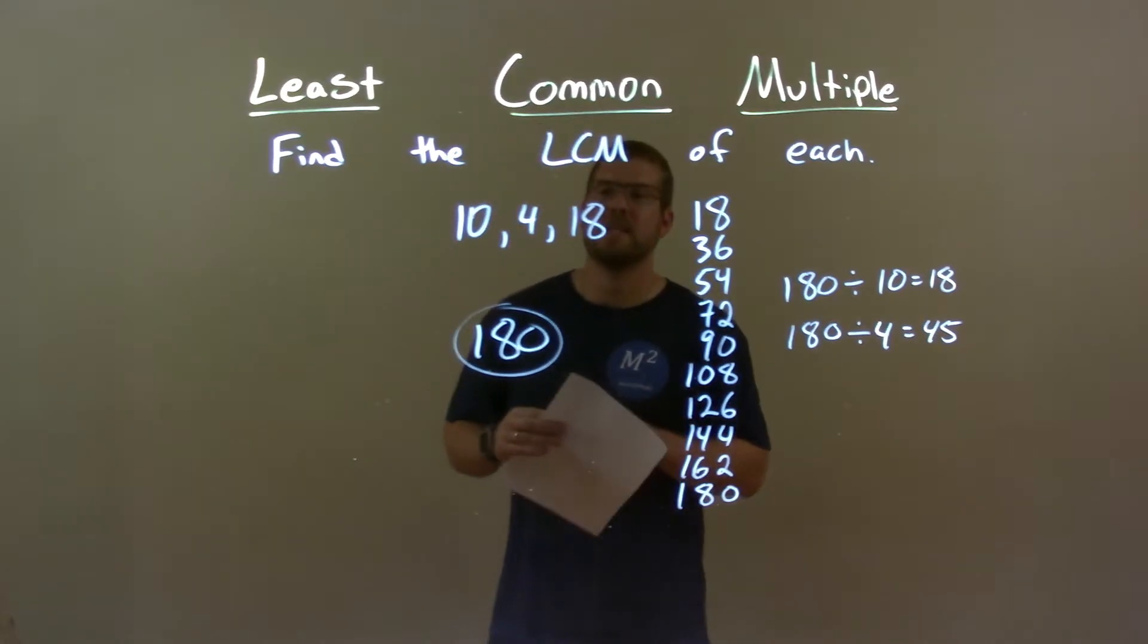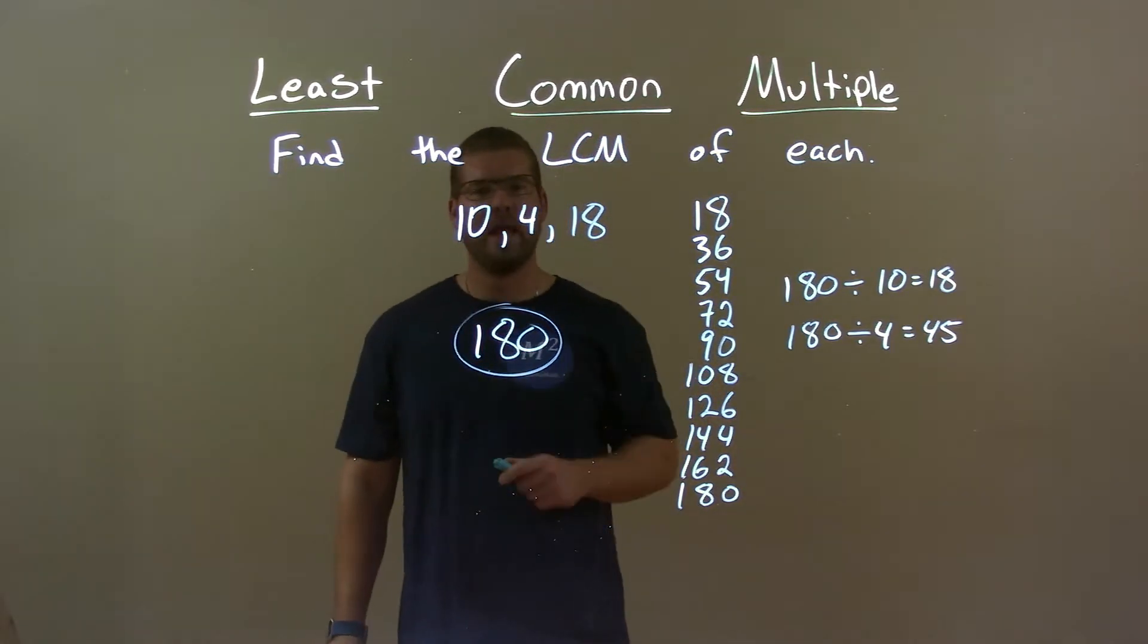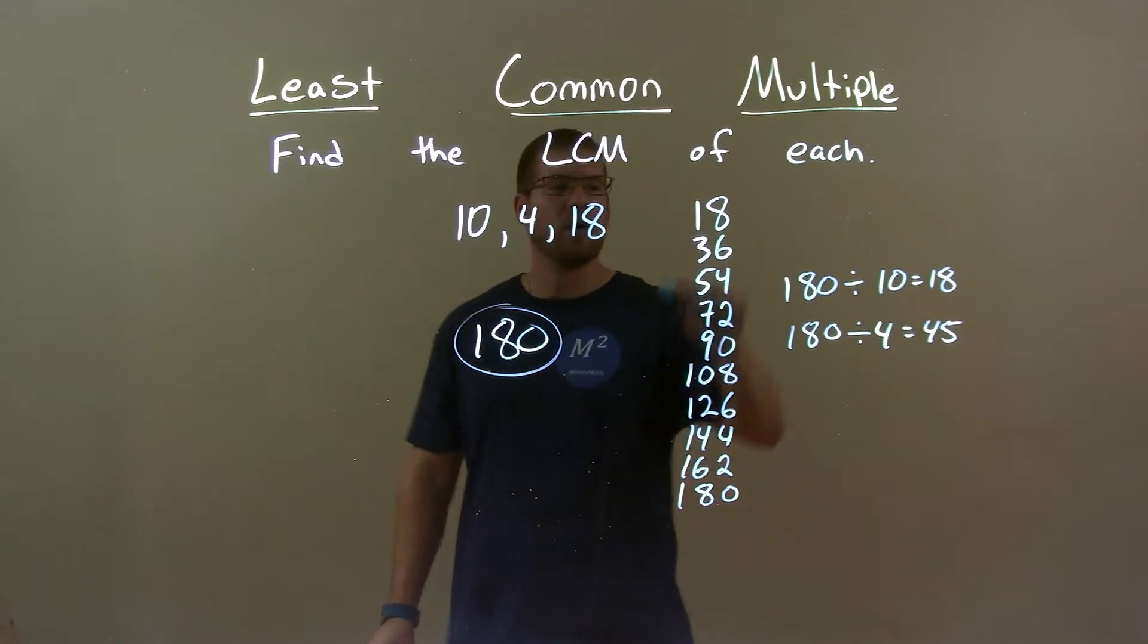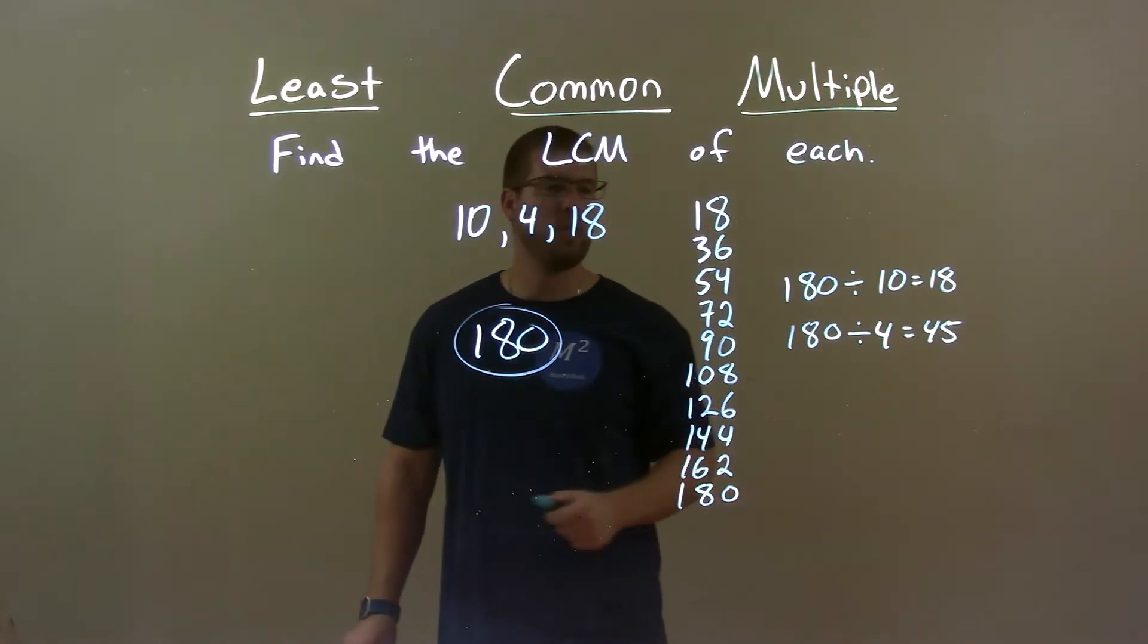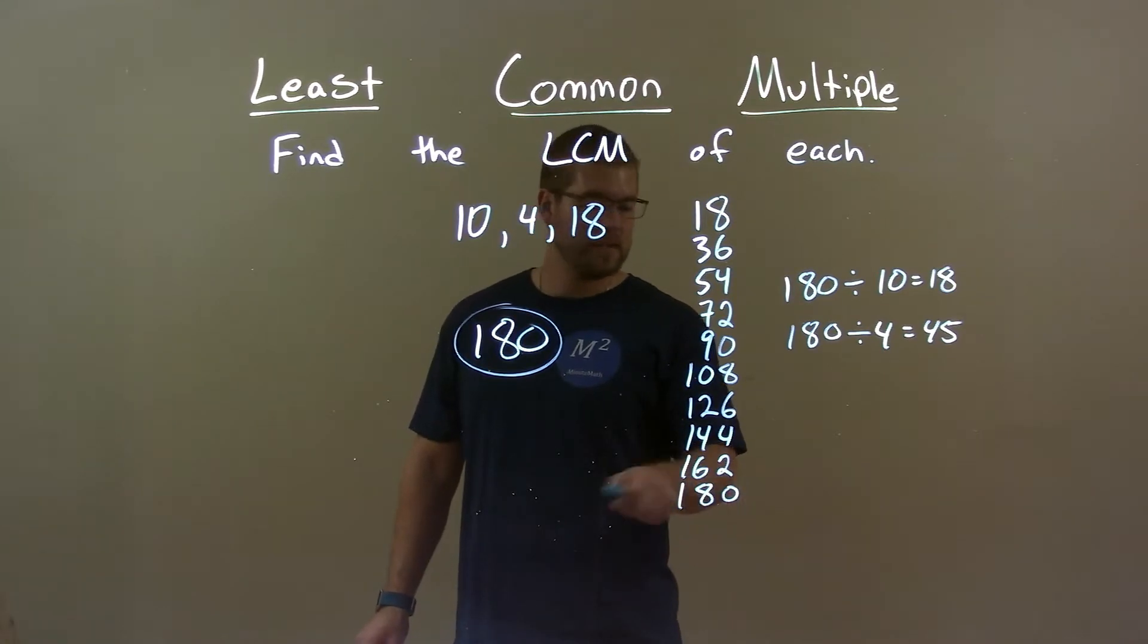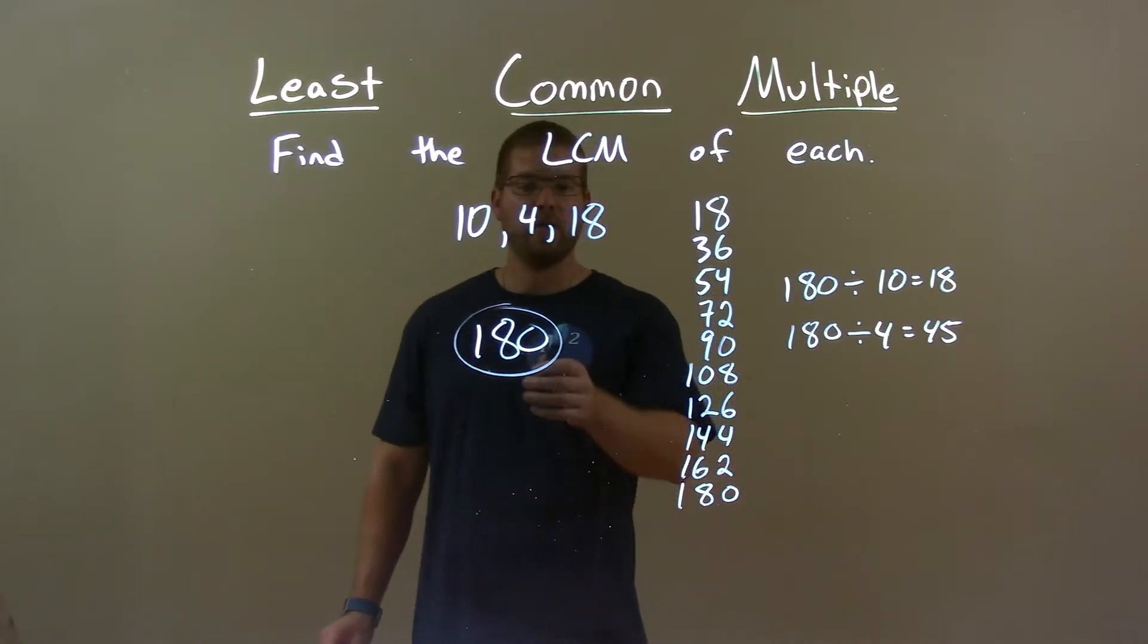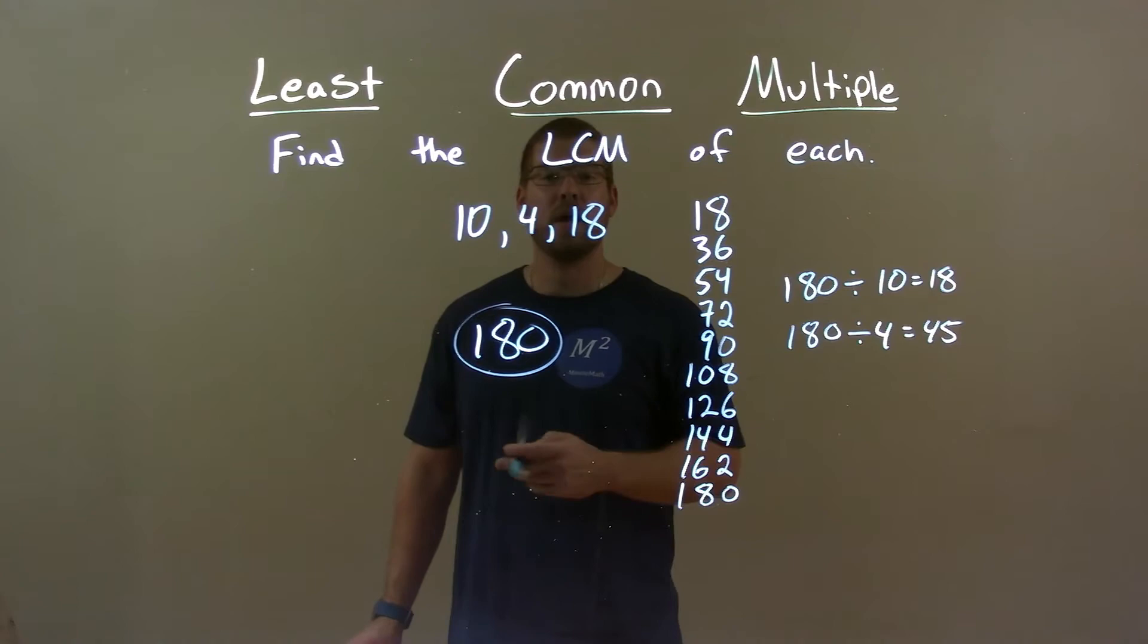So quick recap, we're given 10, 4, and 18, and we find the LCM of that. Well, I go through the multiples of 18 and find the first one that is divisible by 10 and 4, and that comes out, surprisingly, to 180. So my LCM and final answer is 180.